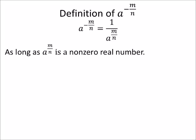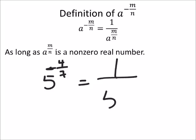Okay, so for example, if I had 5 to the power of negative 4 sevenths, whatever the heck that is, then I would make this 1 over 5 to the power of now positive 4 sevenths.